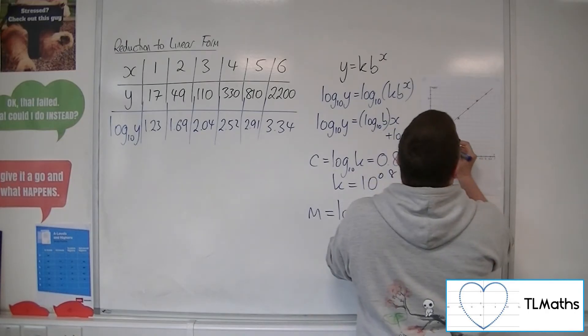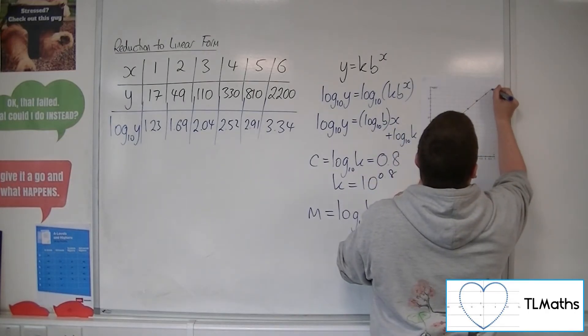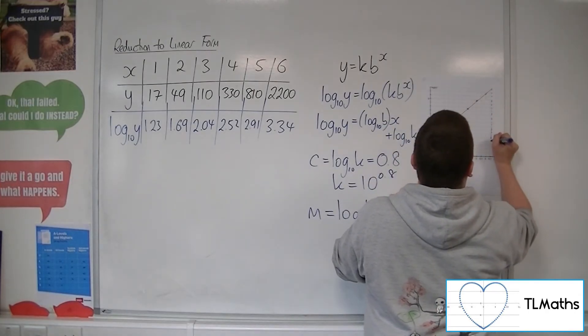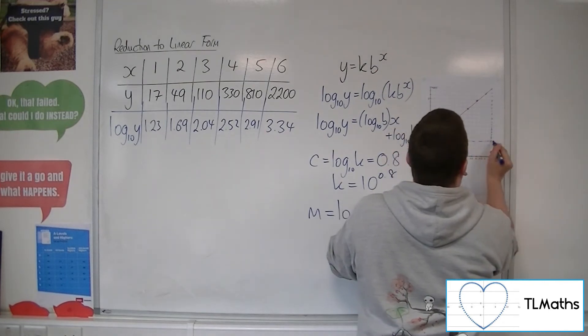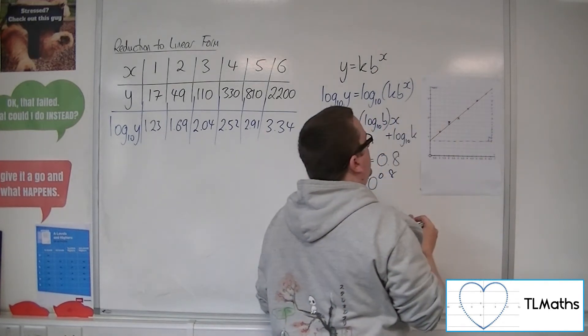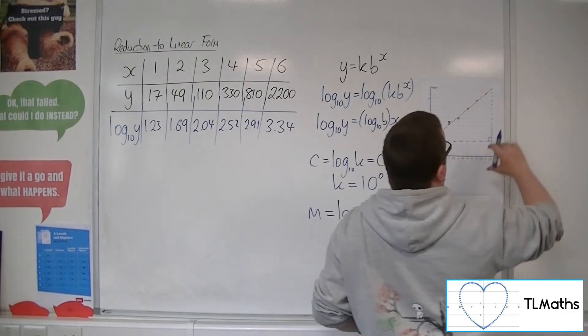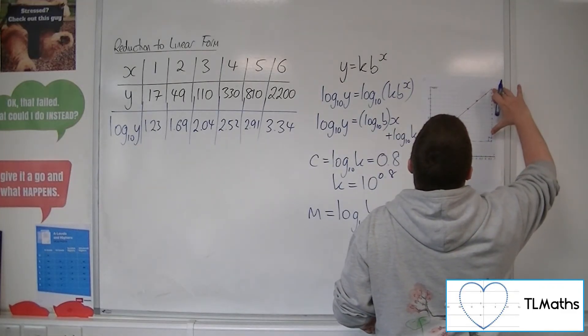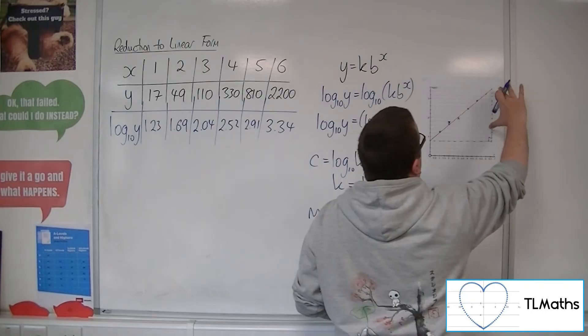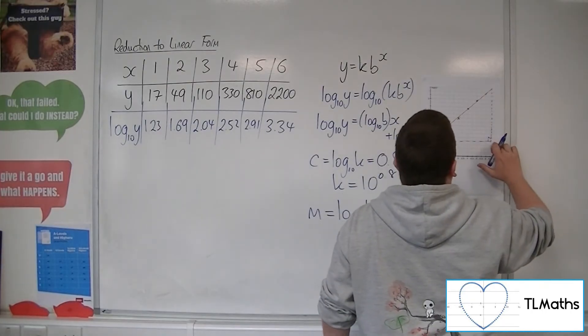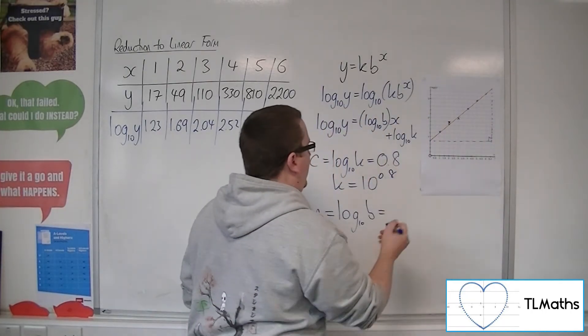So if we think about something like that, having this big right-angled triangle, we've got the difference in the y. So that's going from 3.6 down to 0.8.